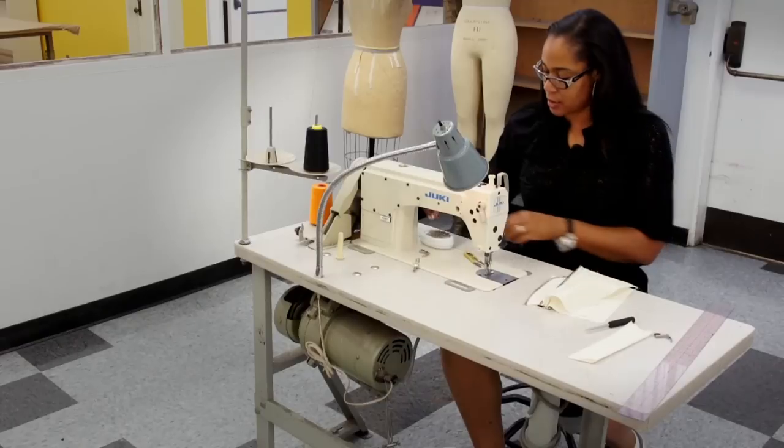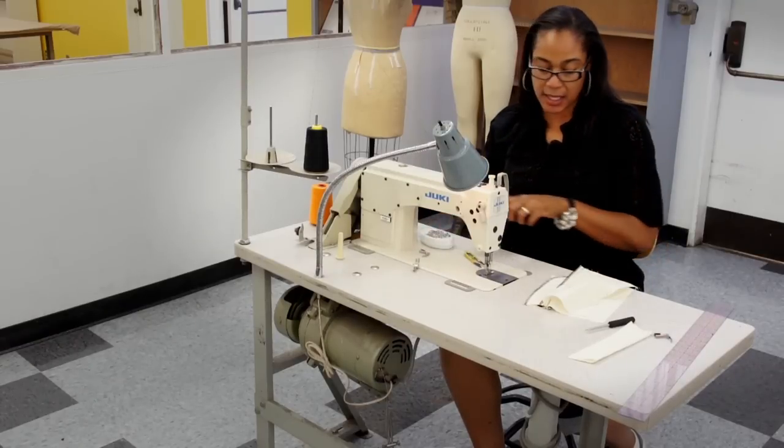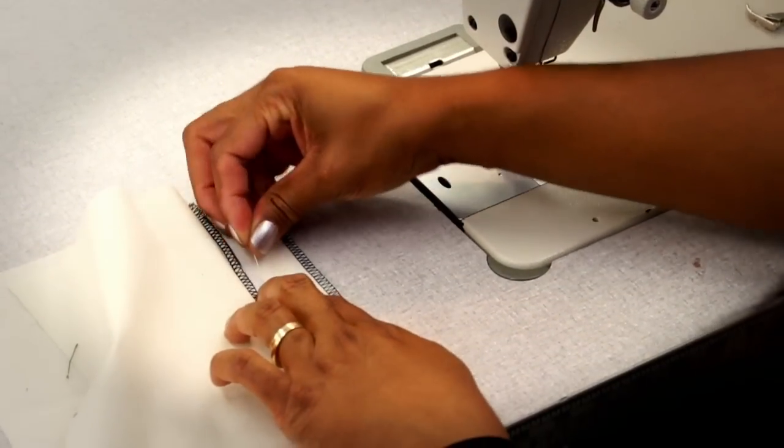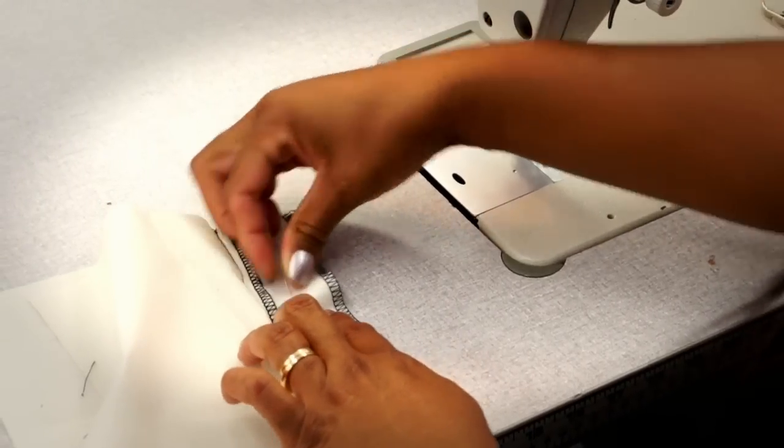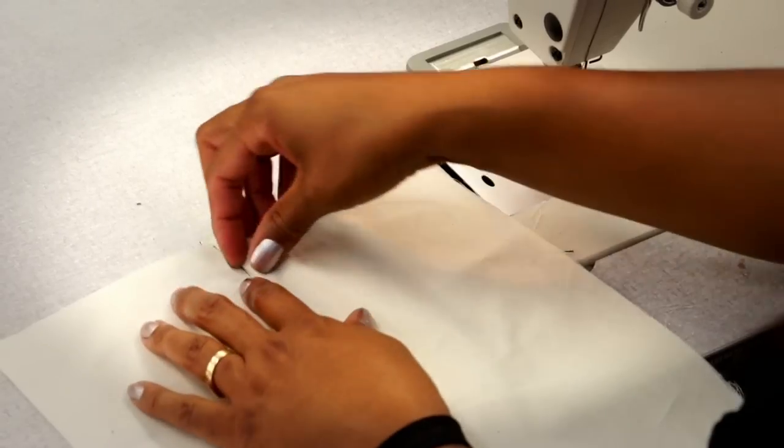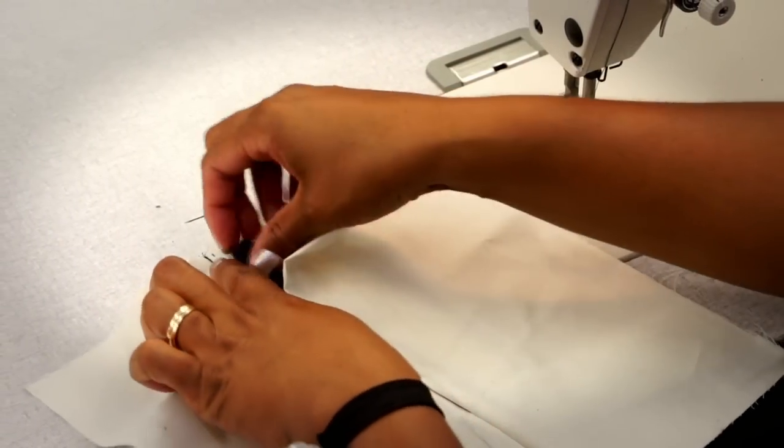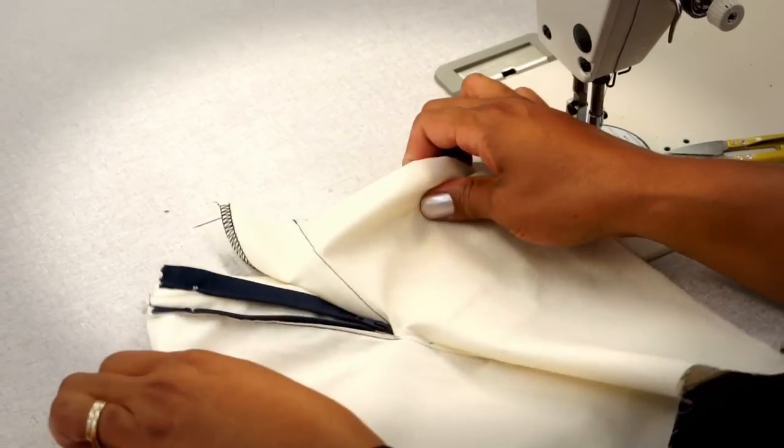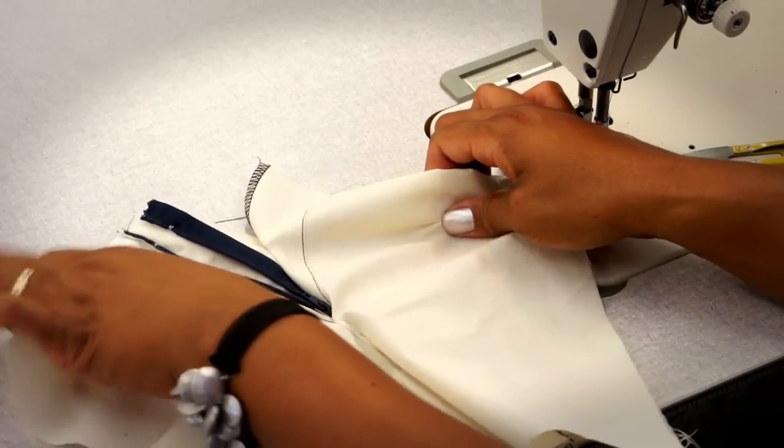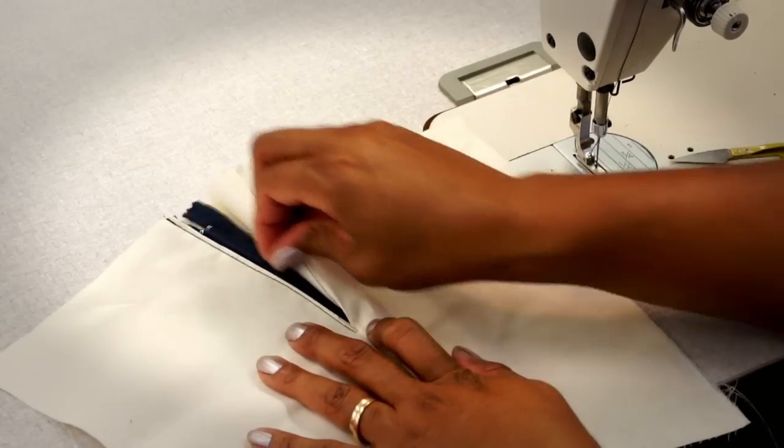If we were to sew all of this closed, let's just say by accident we didn't move the shield out of the way and we sew this, that means that when I come and I try to unzip my zipper, I've sewn it shut. So you have to be really aware of what you're doing.